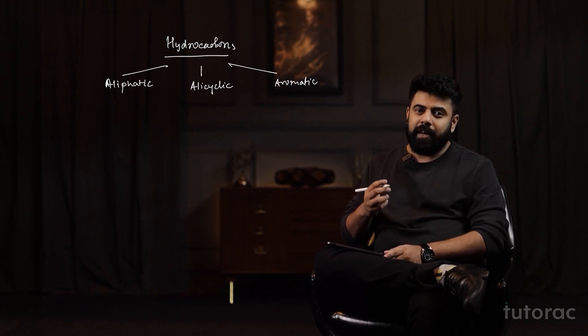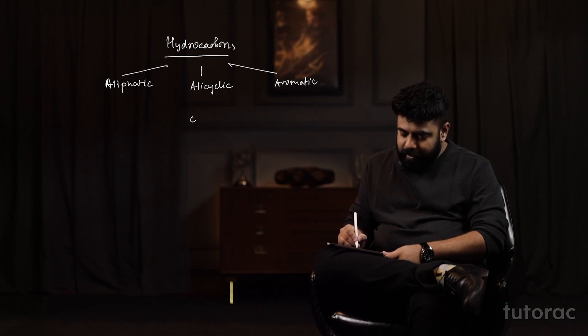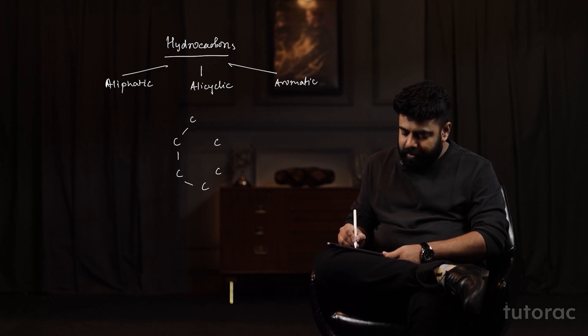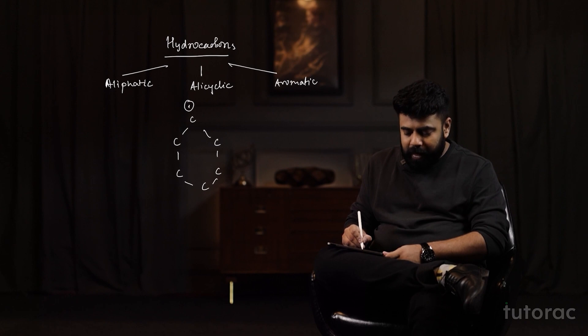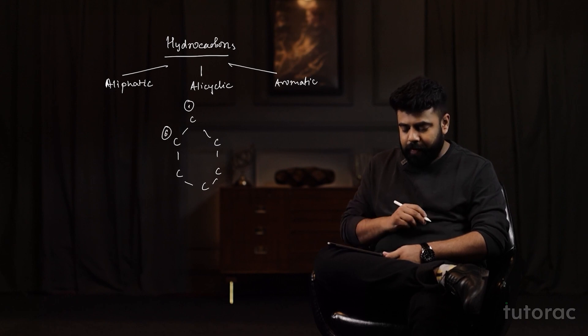What are alicyclic ones? In the alicyclic ones, the first and the last carbon atoms are directly touching each other. For example, if we consider cyclohexane — the first carbon atom and the sixth carbon atom are directly bonded to each other. Hence, such compounds are called alicyclic.